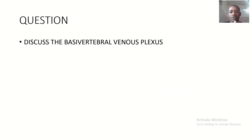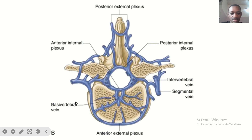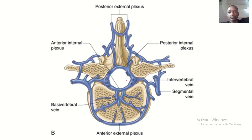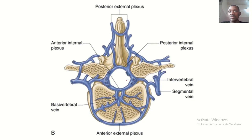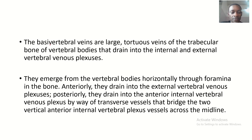The main focus here is the basivertebral venous plexus. It's basically the venous plexus within or around your vertebral bones — the bones that make up your spinal column: the cervical bones, the thoracic bones, the lumbar, and the sacral. The venous plexus around them is what we call the basivertebral venous plexus.